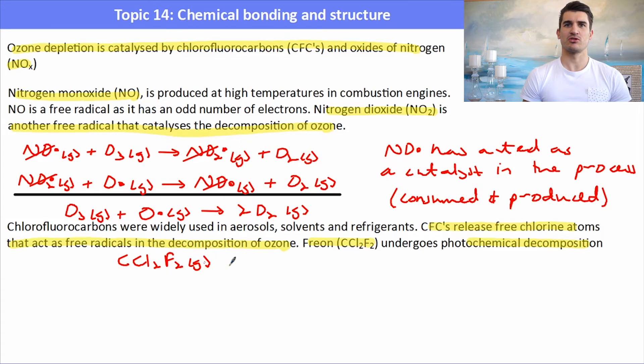We have CCl2F2 and what happens here is a chlorine radical is released and that chlorine radical is what undergoes the catalytic decomposition of ozone. The reason why the chlorine is released is the C-Cl bond is weaker than the C-F bond. So it has a lower bond enthalpy so it's easier to break.